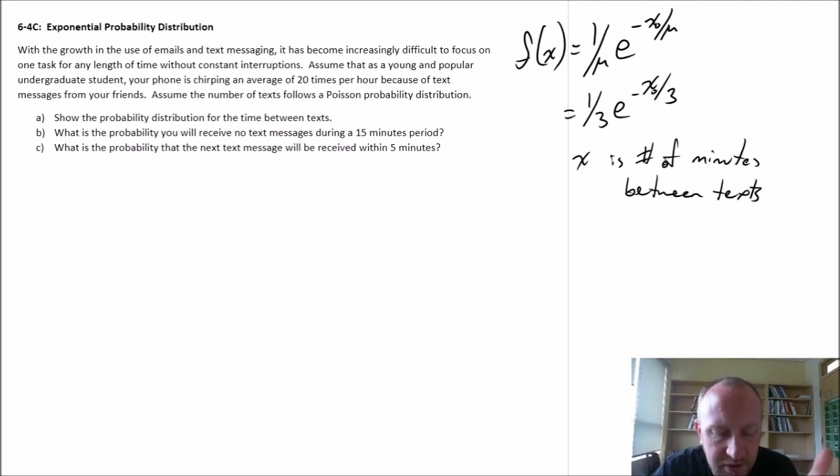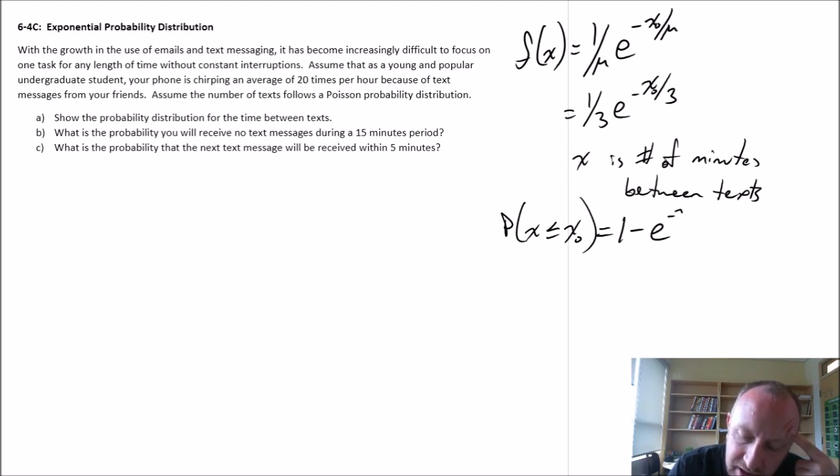Now, here we want to calculate probabilities. So we need that cumulative probability function. The probability of obtaining a value less than some specified value is 1 minus e to the negative x over mu. And in this case, I know what mu is. So this is 1 minus e to the negative x over 3. So there we have our cumulative probability function. We can answer—there's part A. We've already answered part A.